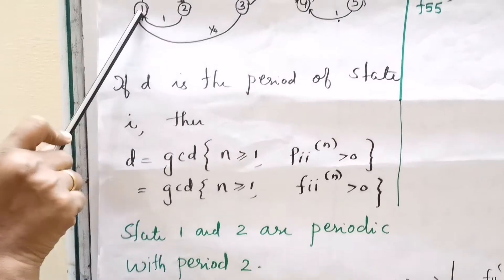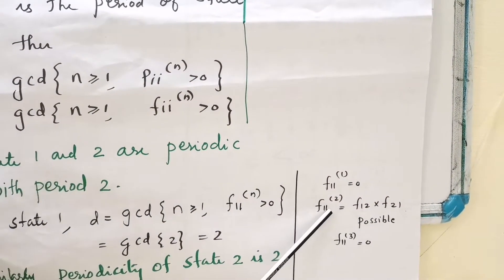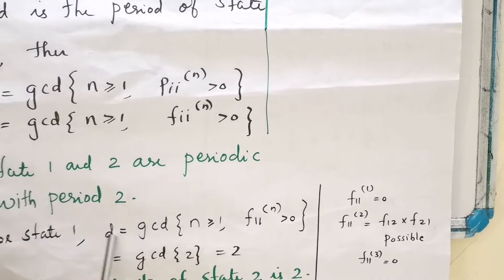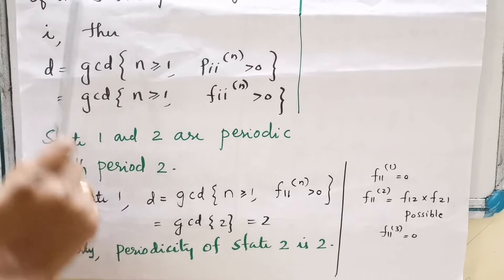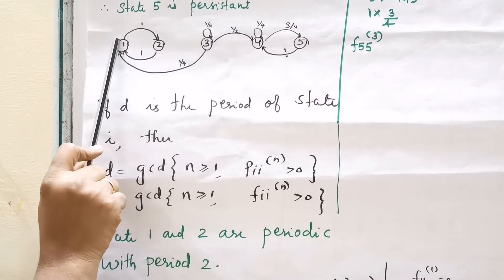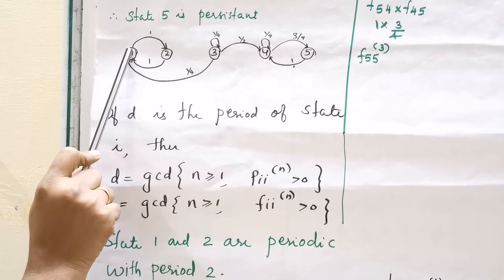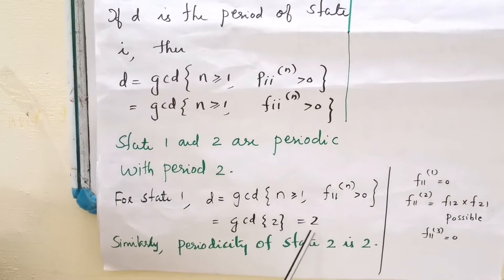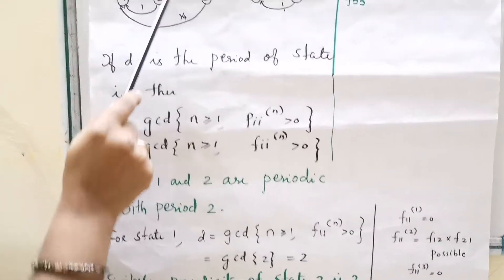For state 1, starting from 1, reaching 1 in 1 step is not possible, but starting from 1, reaching 1 in 2 steps is possible. So the GCD of {2} equals 2. Similarly, in the case of state 2, the periodicity is also 2.